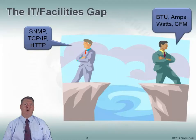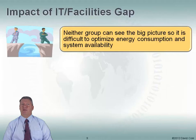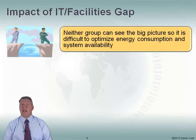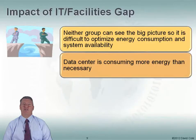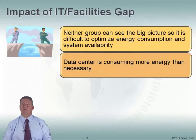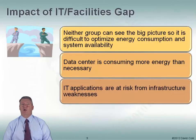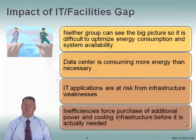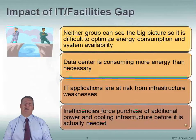It's important that these two groups work together. If they don't, neither group can see the big picture. My facilities guy may look and say my power usage has really gone up in the data center and I don't know why, while the IT guy is thinking, well I know why — I just added 10 new blade servers. But if they're not communicating with each other, they don't understand the big picture. So what happens is our data center ends up consuming more energy than necessary, because facilities will over-provision power and cooling just to make sure there's enough. When we over-provision, we spend more money and consume more energy.